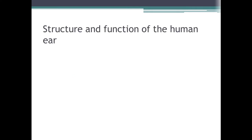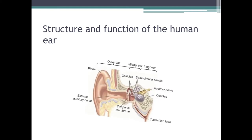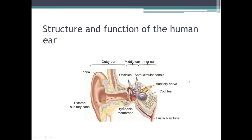Structure and Function of the Human Ear. This is the structure of the human ear. This is a pinna or ear lobe, and this is the external auditory canal. This is the tympanic membrane. This is the cochlea. These are the auditory nerves. This is the semicircular canal. These are the ossicles. This is the outer ear, this is the middle ear, and this is the inner ear.